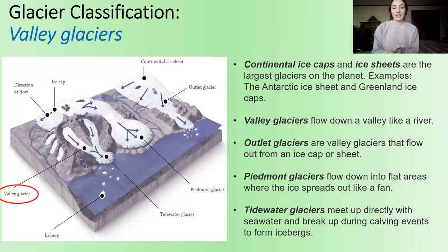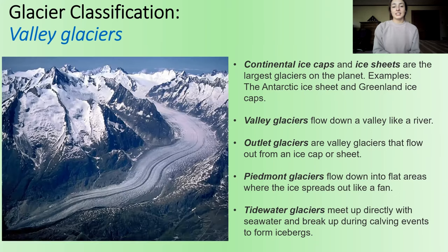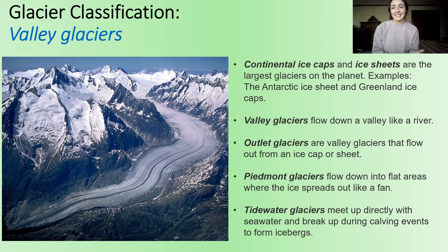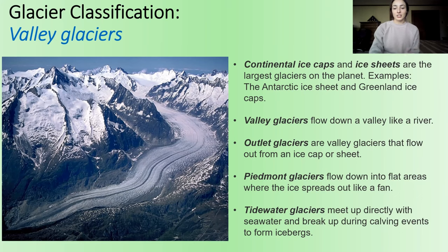Moving on to valley glaciers — we already mentioned these when talking about how they flow. As we can see in this picture, these are glaciers that flow in a valley. Valley glaciers are some of the most beautiful things you'll ever see. We'll talk about some of the erosional and depositional processes that these glaciers can cause a little bit later in the lecture.